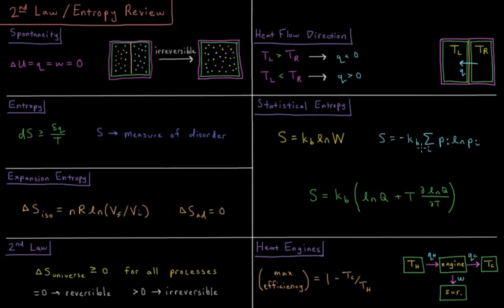If the probabilities aren't equal, we can use the Gibbs entropy, negative Boltzmann constant times sum over all the states times their probability times natural log of their probability.